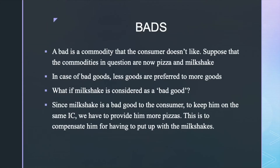Now let's move on to bads. A bad is a commodity that the consumer doesn't like. For example, suppose the consumer loves pizza but dislikes milkshakes. In case of bad goods, less is preferred to more. So less milkshakes are preferred to more milkshakes. Take the consumption bundle 10-5 where the consumer consumes 10 pizzas and 5 milkshakes. If the consumer is to be given more milkshakes, to keep him on the same indifference curve we have to provide him more pizzas to compensate him for having to put up with the milkshakes.